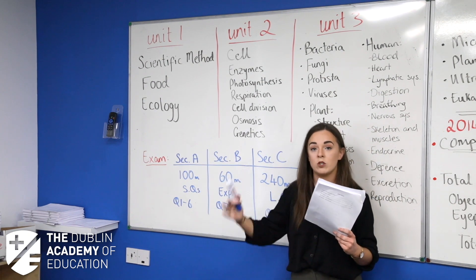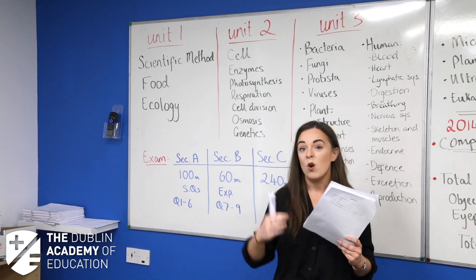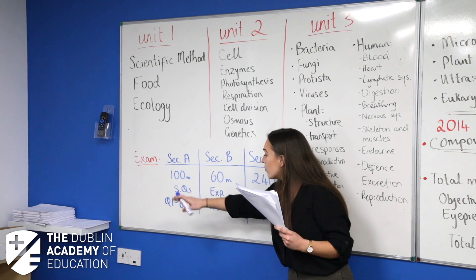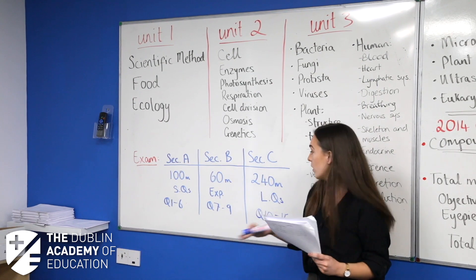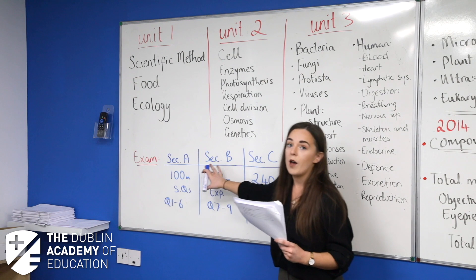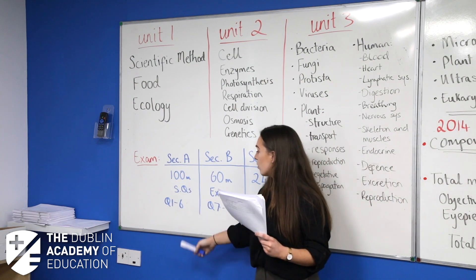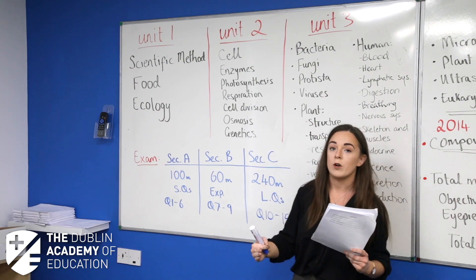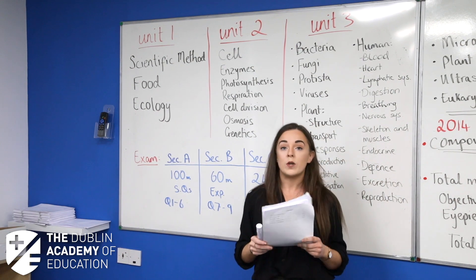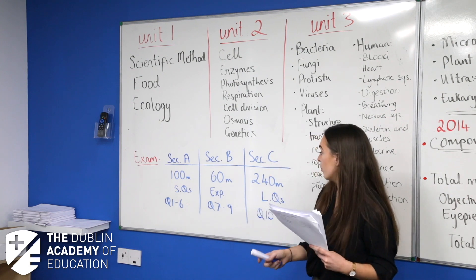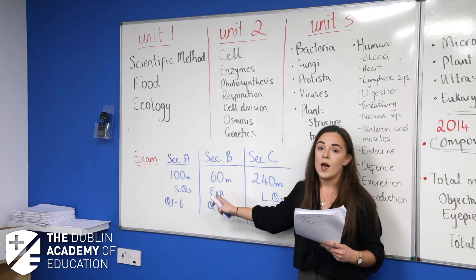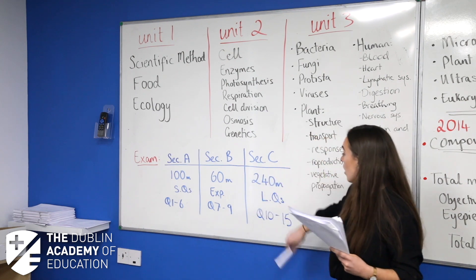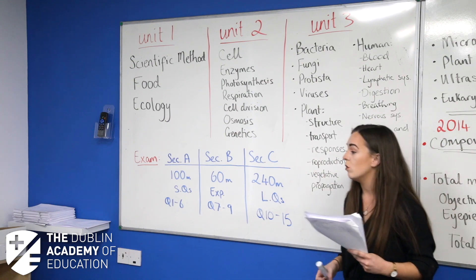Section A is going to be short questions — little one word, one line answers — and you're going to answer 5 questions out of 6. This is all in your notes; I'm just briefly summarising it on the board here. Questions 1 to 6 are short questions. Section B then is going to look at experiment questions. On the course there are 23 mandatory experiments that you'll have to go through. You answer 2 out of 3 questions there and they are 30 marks each.